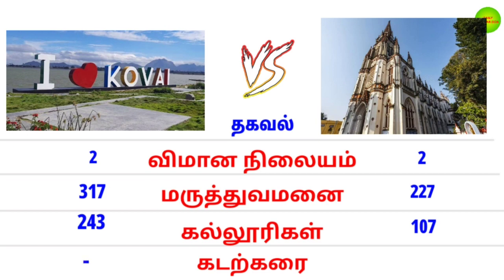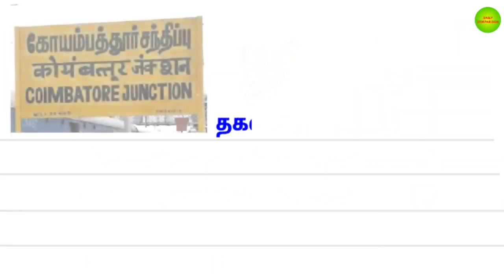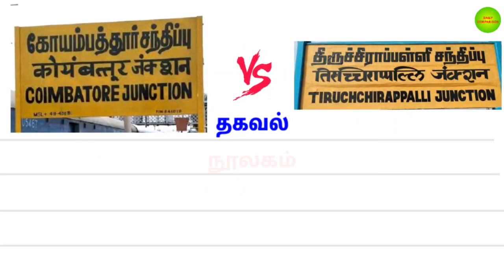There are 243 acres and there are 107 acres. There are 2 acres. There are 2 acres. In Tamil Nadu, there are 2 acres. They have 2 acres. There are 2 acres of 15 acres.